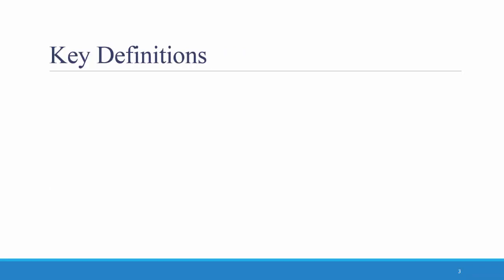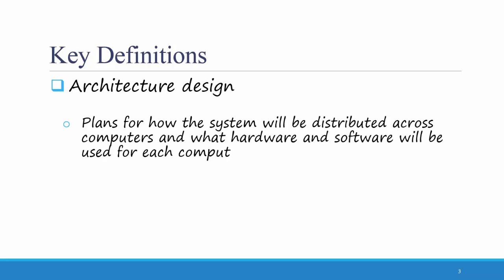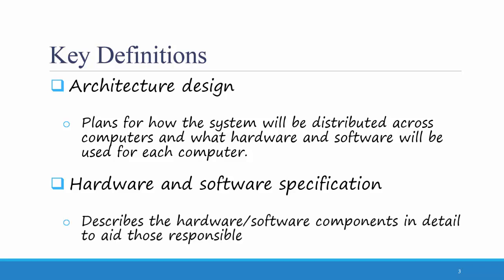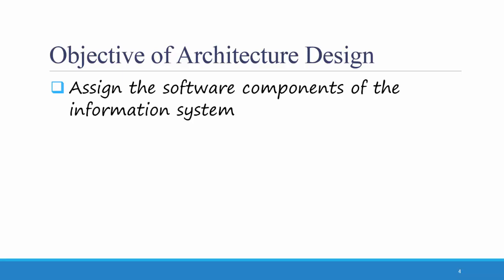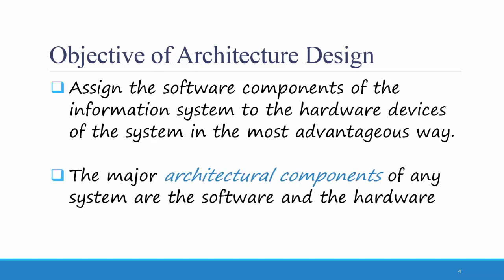Let's start with some key definitions. Architecture design includes plans for how the system will be distributed across computers and what hardware and software will be used for each computer. A hardware and software specification is a document that describes the hardware and software components in detail to aid those responsible for purchasing those products. The objective of architecture design is to assign the software components of the information system to the hardware devices of the system in the most advantageous way. The major architectural components of any system are the software and the hardware.